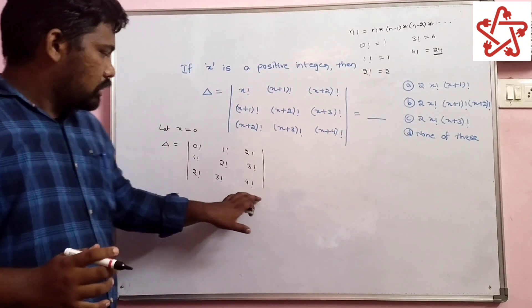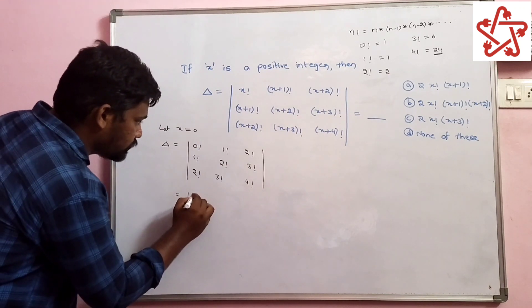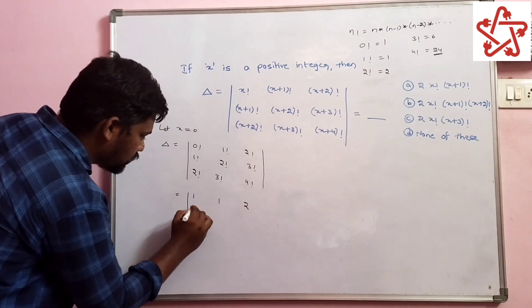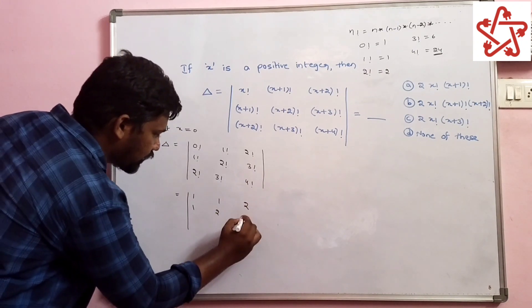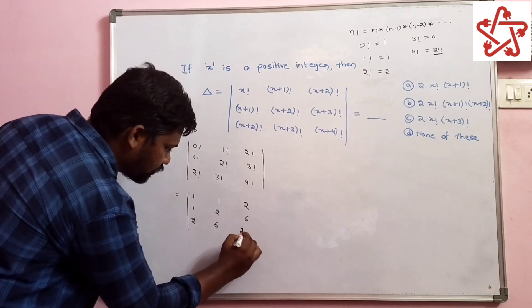Before finding the determinant, substitute the value of particular factorials. 0 factorial is 1, 1 factorial is 1, 2 factorial is 2, 1 factorial is 1, 2 factorial is 2, 3 factorial is 6, 2 factorial is 2, 3 factorial is 6, 4 factorial is 24.